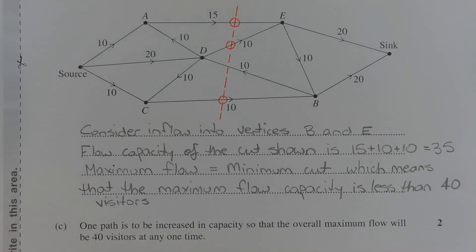By considering the inflows and outflows of the appropriate vertices, path CB could be increased by 5 so that its flow capacity is 15. Other answers could include increasing the flow capacity of path AE so that its flow capacity is 20 or increasing the flow capacity of path DE so that its flow capacity is 15.